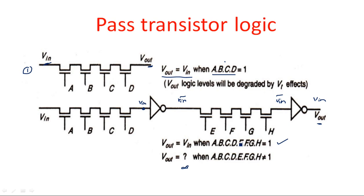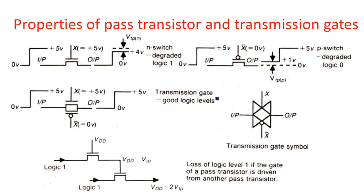To summarize pass transistor logic: when the control input is high, output equals input; when control input is 0, the output is nothing. Now there is a drawback with pass transistor logic, which explains why we move from pass transistors to transmission gates. This is clearly explained by examining the properties of both.